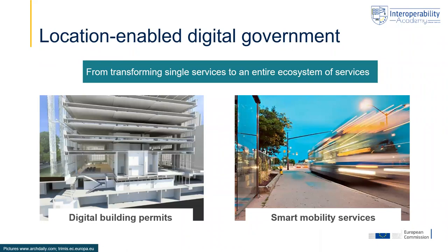These case studies are diverse. Our first example is about a digital building permit — a single government service that can be transformed quite strongly by taking advantage of location data and technologies. Our second example is about the provision of mobility services and how location data and technologies could make these services smarter by transforming an entire ecosystem of services.